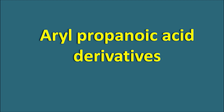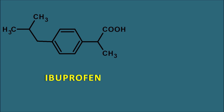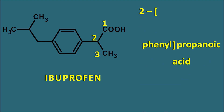Let us start our discussion with the aryl propanoic acid derivatives. This is one of the structures in this aryl propanoic acid derivative and this is ibuprofen, one of the well-known drugs. Here the carboxylic acid is the principal functional group — this is a propanoic acid derivative indicated by the infix 'pro'. This propanoic acid is attached with a phenyl group at the second position, so the name of ibuprofen can be written as 2-phenyl propanoic acid.